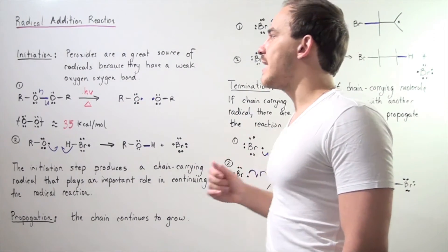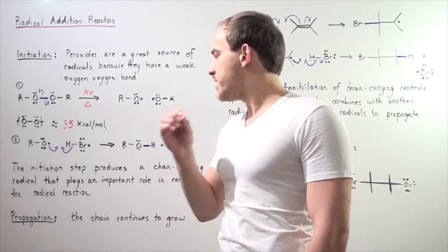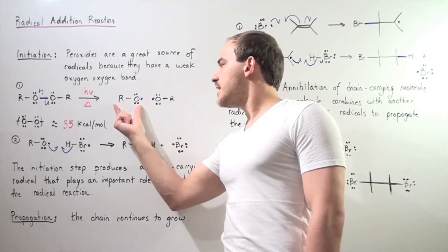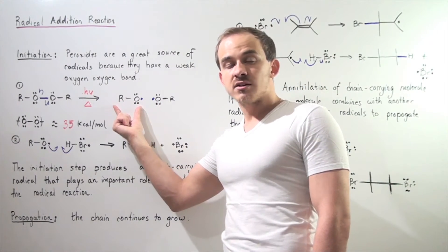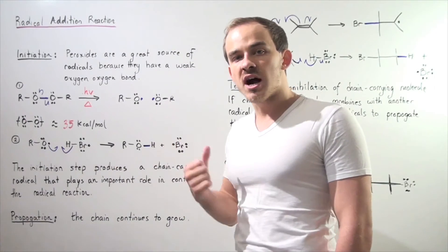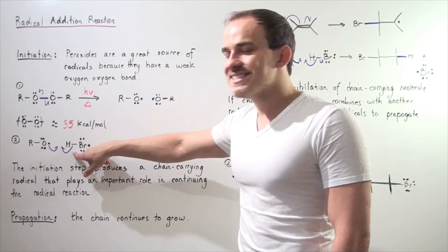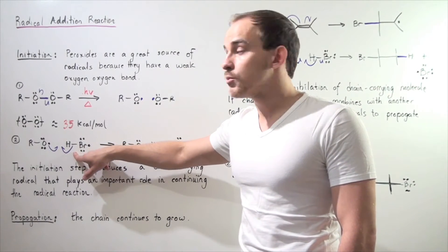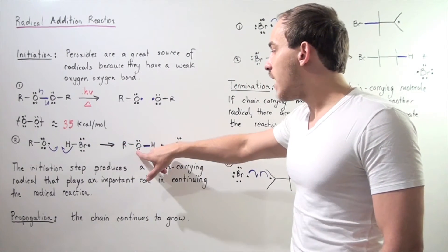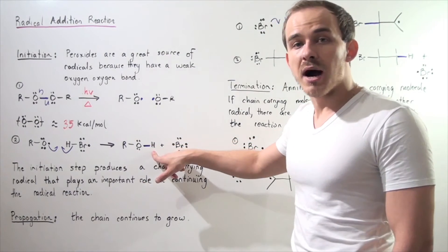In the second step of our initiation, one of these radicals reacts with some other compound, let's say HBr. What happens is this sigma bond dissociates and breaks, forming the following oxygen-H bond.